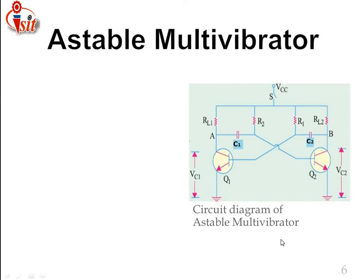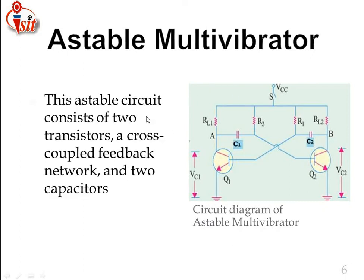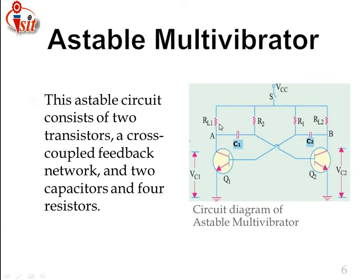Here we discuss the circuit diagram of the astable multivibrator. The circuit consists of two transistors in a cross-coupled feedback network — transistor Q1 and transistor Q2. Coupling means the output of the first system is connected as input to the second system, and vice versa. The circuit uses two capacitors C1 and C2 and four resistors: RL1, RL2, R1, and R2. Both capacitors are connected across the transistor bases. Thus the astable multivibrator is formed.